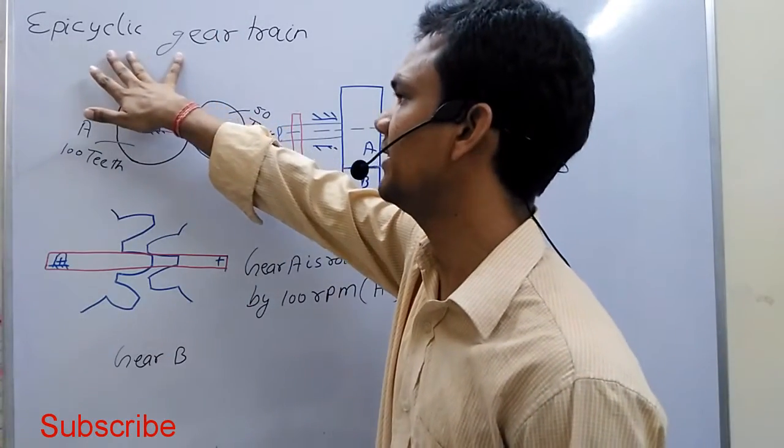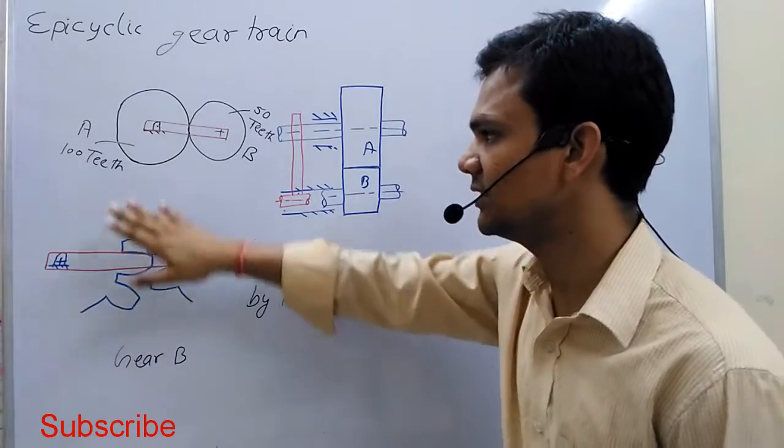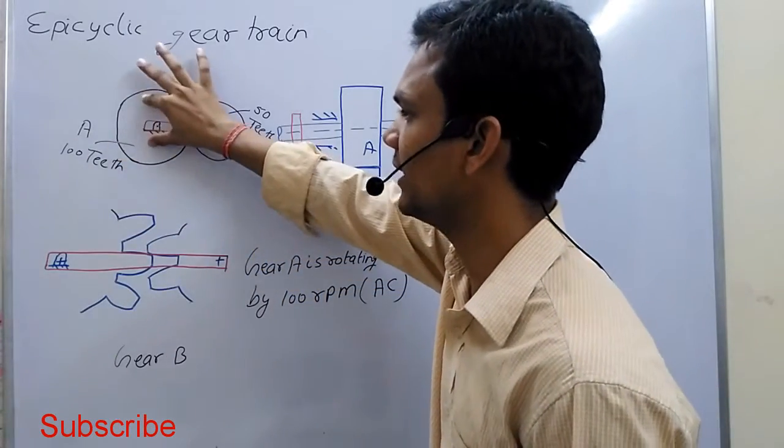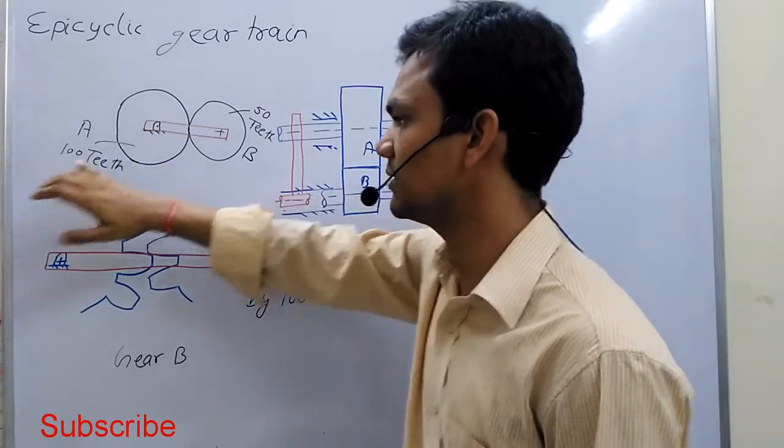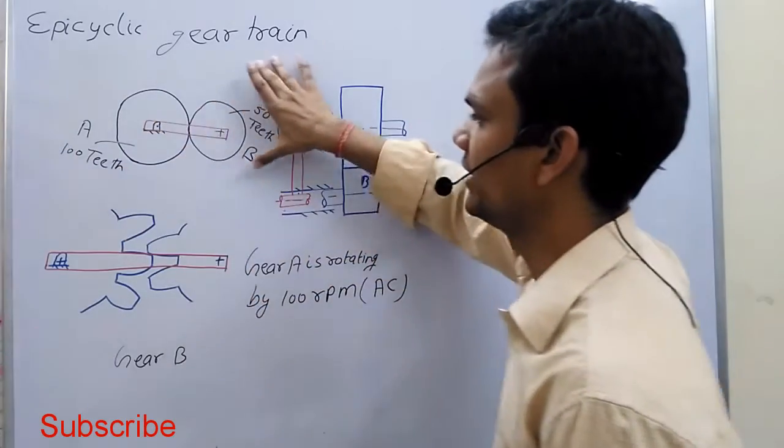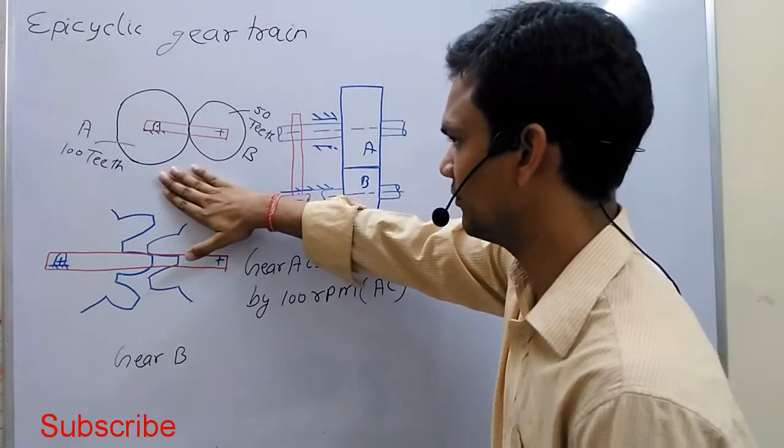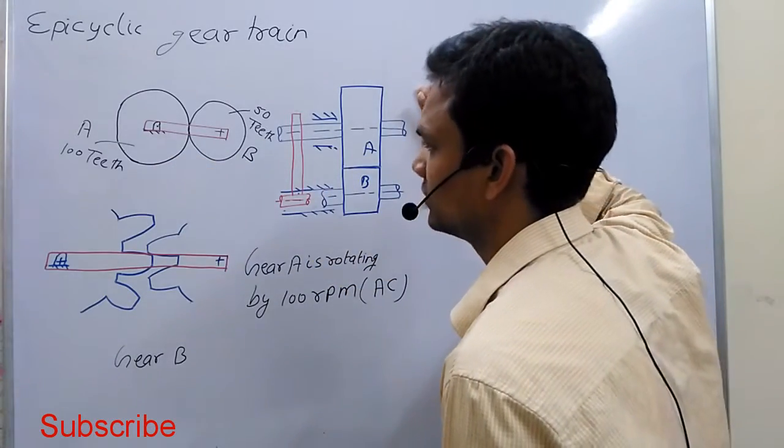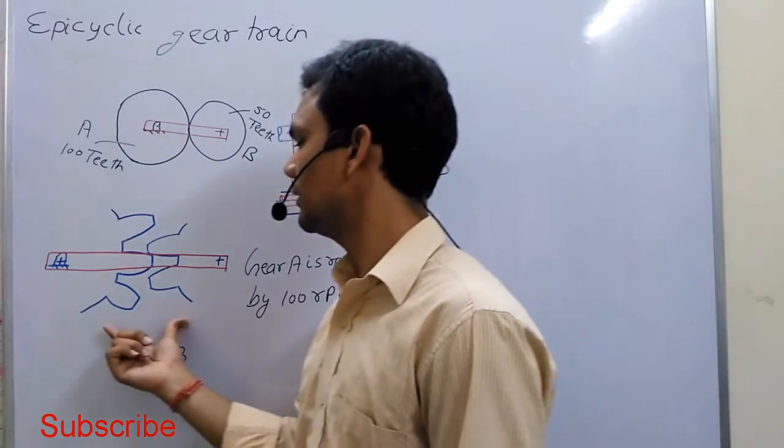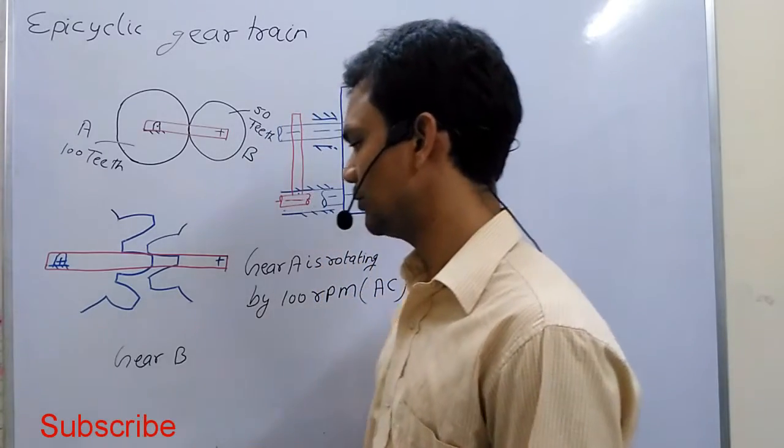To understand epicyclic gear trains, we consider a case. Suppose gear A is fixed with 100 teeth, and gear B has 50 teeth. This is the front view, side view, and top view of the gear.